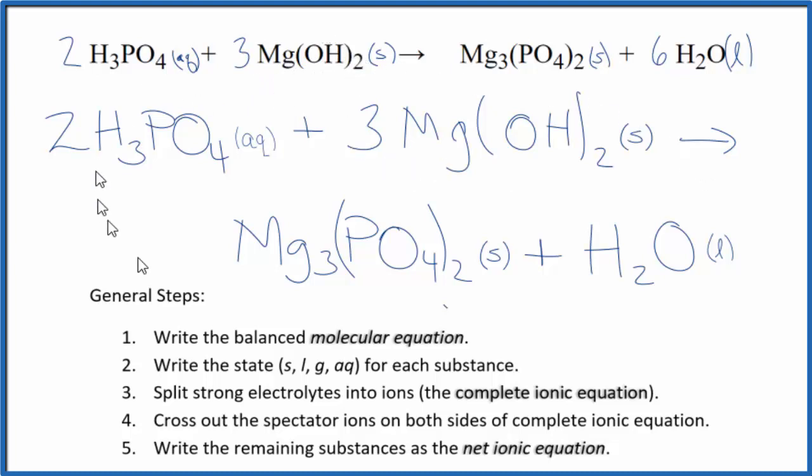So, this is our net ionic equation for phosphoric acid plus magnesium hydroxide. Really, the key to writing this net ionic equation is understanding this is a weak acid here, H3PO4. So, we don't split that apart. Then, we have a solid, solid, and liquid. So, we don't split anything apart. The complete ionic is the same as the net ionic equation. This is Dr. B, and thanks for watching.